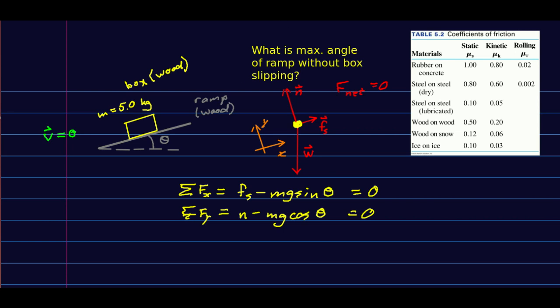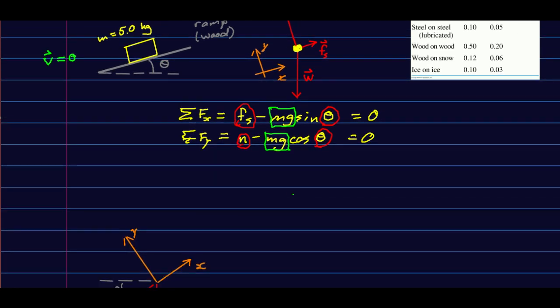So our free body diagram is exactly like before. Our f net is still zero, and so our Newton's second law gets written out exactly the same way except with this unknown angle. And if we again count unknowns, the normal and fs are unknown, but also because theta is unknown, now we have a third unknown again. And it's actually a little nasty because that unknown is inside sine and cos functions.